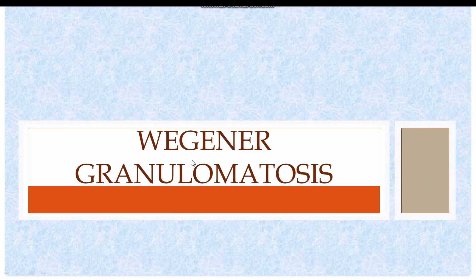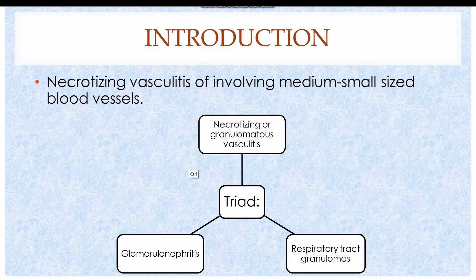The next topic in the vasculitis section is Wegener's Granulomatosis, also known as Granulomatosis with Polyangiitis. Wegener's Granulomatosis is characterized by necrotizing vasculitis of medium to small sized blood vessels. The vasculitis also affects arterioles.